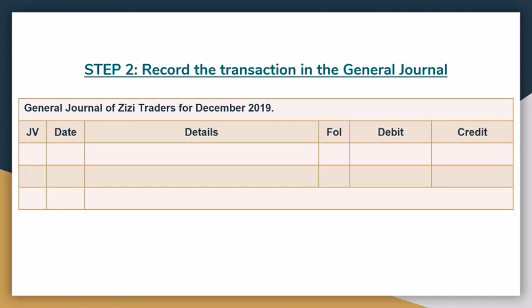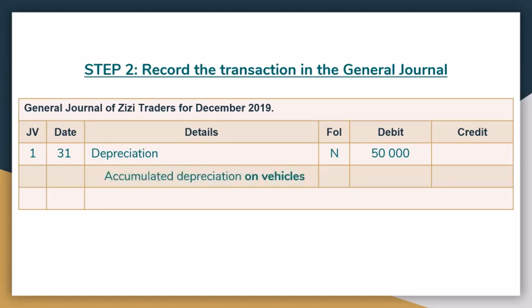Now step two will be to record it in the general journal. So we will issue a journal voucher on the last day of December 2019. The account that is debited is depreciation, which is an expense account in the nominal section — the value is 50,000 Rand. The account that is credited is accumulated depreciation on vehicles; you have to write 'on vehicles' in there, not just accumulated depreciation. It's a balance sheet section account because it's a negative asset, and the value is still 50,000 Rand. Remember, just a quick general journal recap: the account debited must always be first — that's why depreciation is first — and then it's the account credited, but the account credited is slightly indented towards the right. That's how you show which account is credited.